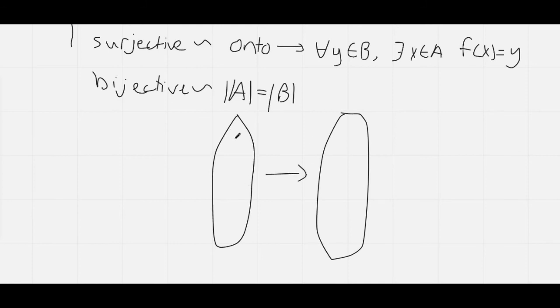So if we had the same sets, one, two, three, and four, and A, B, C, and D, then if we just map everything like so, so one goes to A, two goes to B, so on. This is a bijective function.